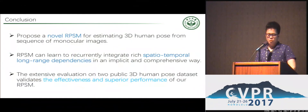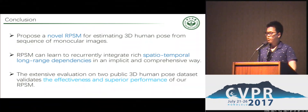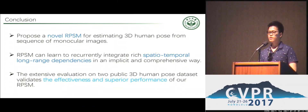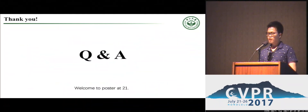In conclusion, we have proposed a novel RPSM for estimating 3D human pose from sequences of monocular images. RPSM can learn to recurrently integrate rich spatial, temporal, and long-range dependencies in an implicit and comprehensive way. The extensive evaluation on two public 3D human pose datasets validates the effectiveness and superior performance of our RPSM. Thank you for listening, and I'm happy to answer any questions.